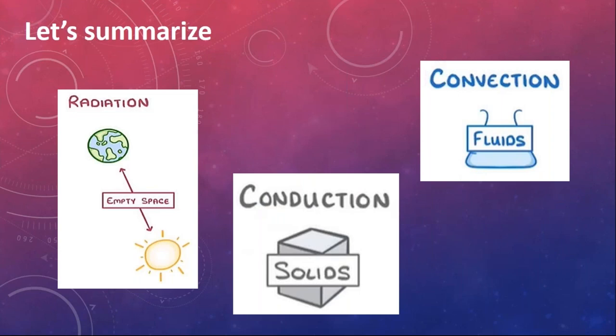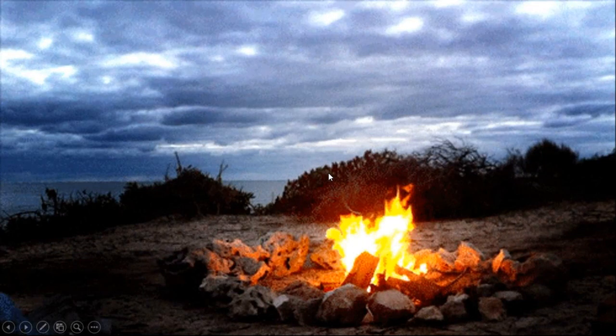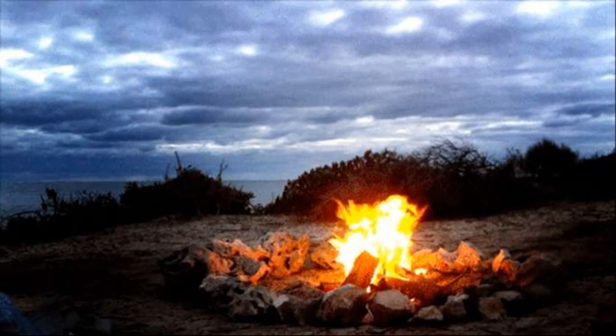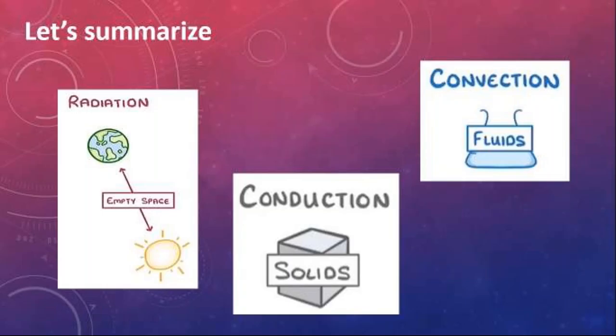Let's summarize what we learned today. Radiation happens through empty space — through a vacuum — and does not require any particles. Conduction and convection both require particles. Conduction happens inside solids and is based on vibrating particles. Convection happens inside fluids — gases and liquids — and is based on changes in density. We can see all three processes in one example: fire gives us heat energy in three ways — radiation, conduction, and convection.